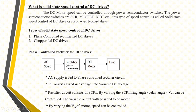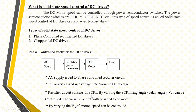By varying the SCR firing angle, which is also called the delay angle, the output voltage can be controlled. The variable output voltage is fed to the DC motor. By varying the input voltage to the motor, the speed can be controlled. The firing angle is the angle at which the SCR starts to conduct. Looking at the symbol of SCR, it has three terminals: anode terminal, cathode terminal, and gate terminal.